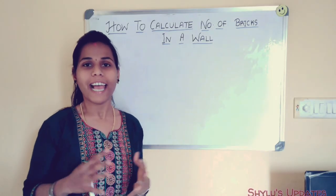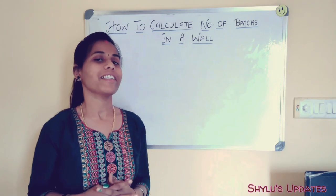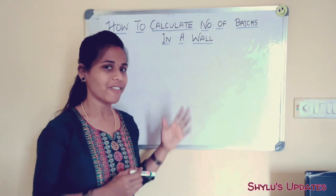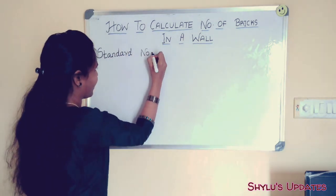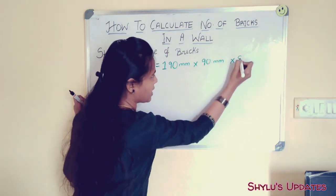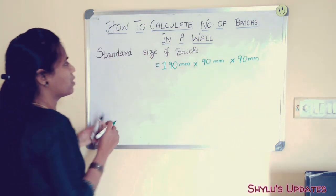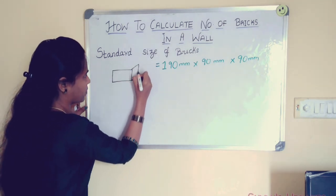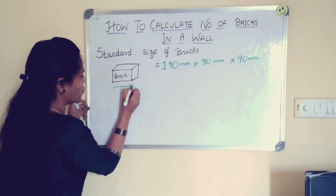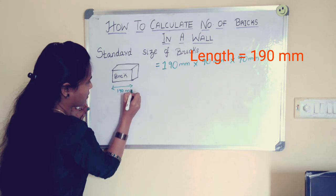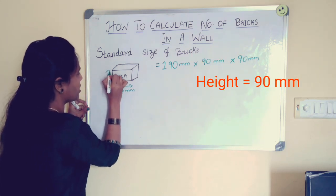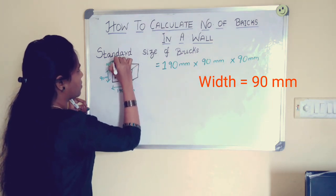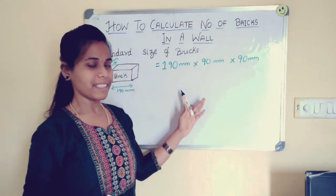For that, we should know the standard size of brick used in India as per BIS standard. The standard brick dimensions are: length 190 mm, height 90 mm, and width 90 mm. This is the standard size of bricks in India.